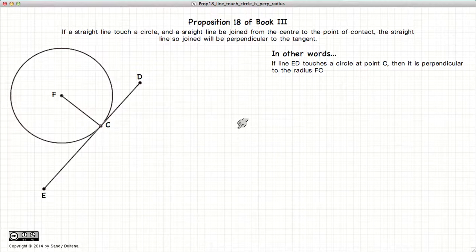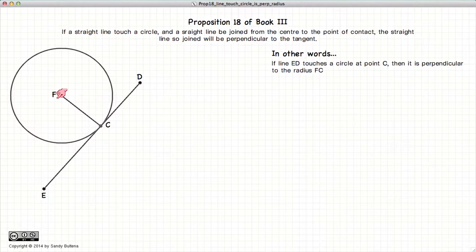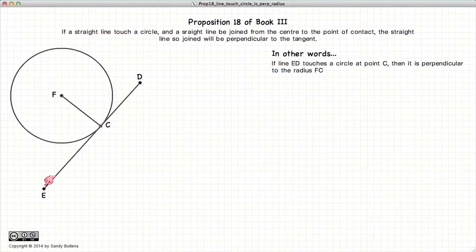The proposition states that if you have a circle, a line that touches the circle, and we draw the radius to the point from the center of the circle to where it touches, this radius FC will be perpendicular to the line ED.